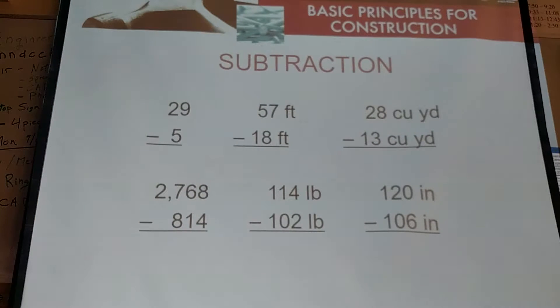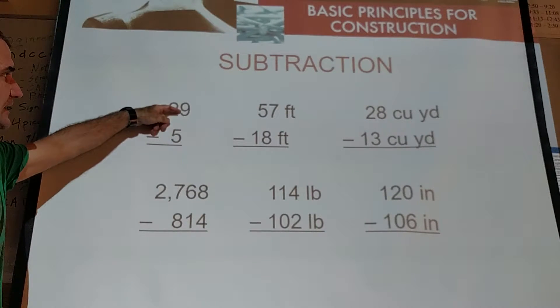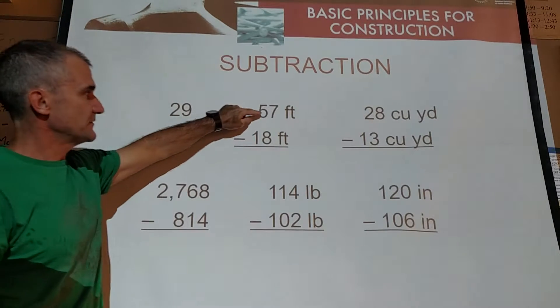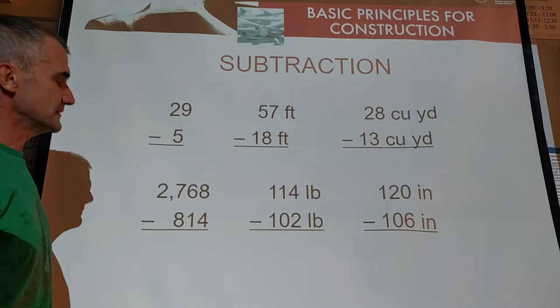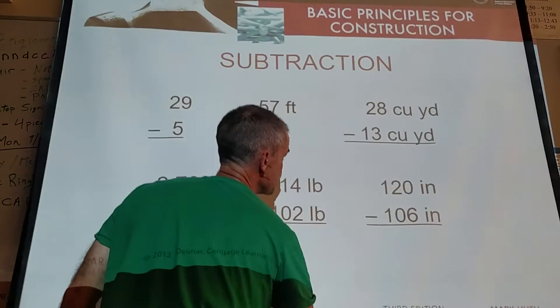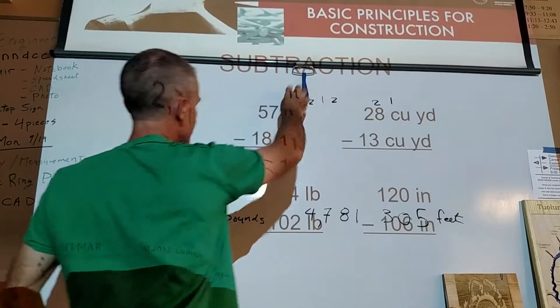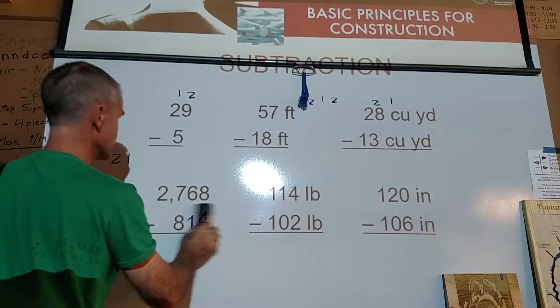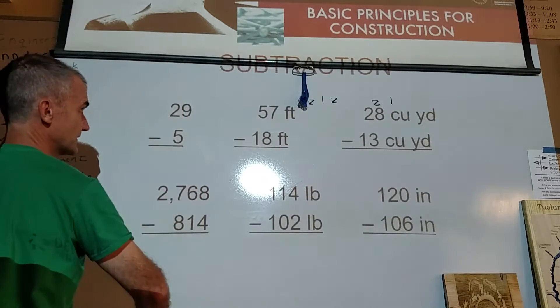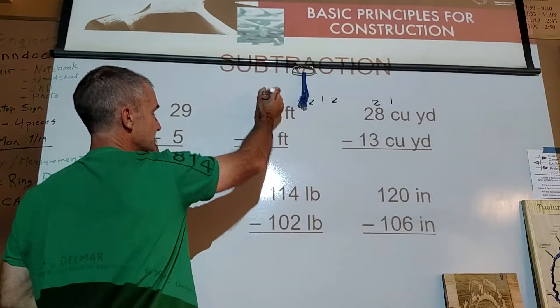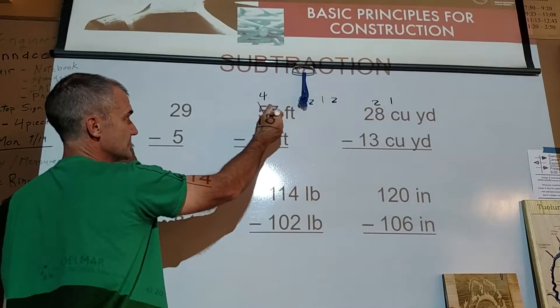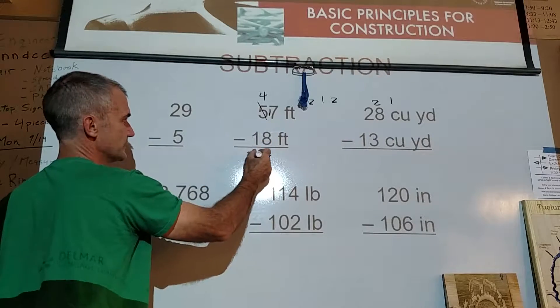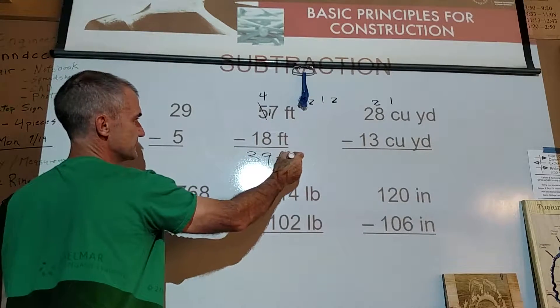Here's some more subtraction. 29 minus 5. You do 9 minus 5 to get 4. And carry the 2 down to get 24. 57 minus 18. I have to borrow a whole 10 from here. So that becomes 40. This becomes 17. 17 minus 8 is 9. 4 minus 1 is 3. Remember the units of feet.